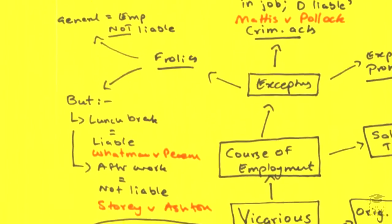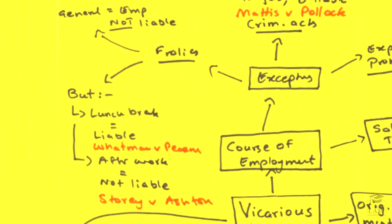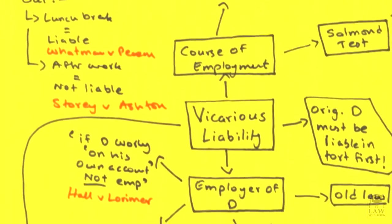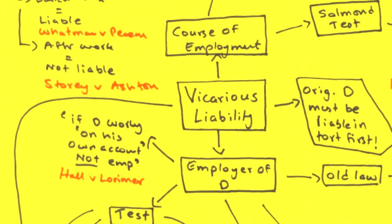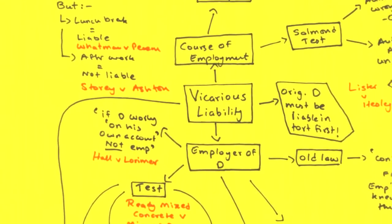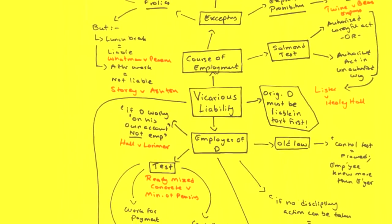One of the most interesting exceptions in course of employment is 'frolics of their own.' In essence, a defendant employer will generally not be liable for their employee's acts outside of the course of employment. However, there have been instances where, even while out of bounds of the course of employment, courts have held the employer liable, as in Watman and Pearson. However, after work this is not the case and the employee is completely outside the bounds of the course of employment, as in Story and Ashton. Vicarious liability, versatility aside, provides a great opportunity for argument even in an examination situation.